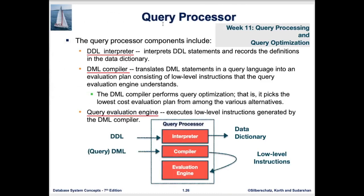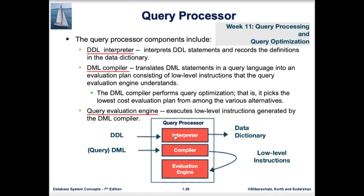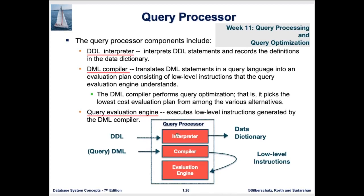The query processor is composed of three sub-modules with specific purposes. First is the DDL interpreter, which interprets the data definition language to create the data dictionary. Second is the DML compiler — a given SQL query passes through the compiler module, which creates a set of low-level instructions implemented by the evaluation engine. The evaluation engine is where those low-level instructions are actually executed for a particular query.